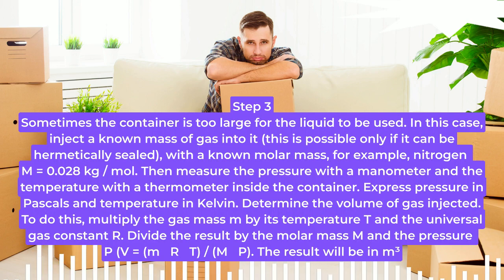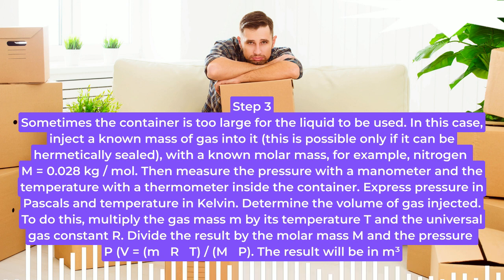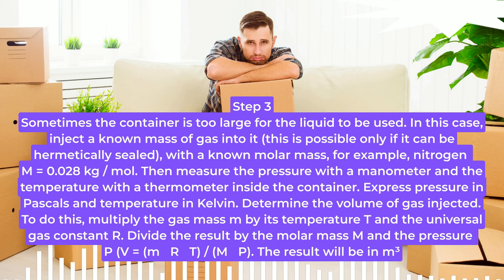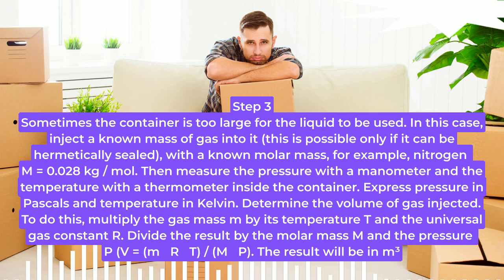Step 3. Sometimes the container is too large for liquid to be used. In this case, inject a known mass of gas into it. This is possible only if it can be hermetically sealed, with a known molar mass — for example, nitrogen, M = 0.028 kg/mol. Then measure the pressure with a manometer and the temperature with a thermometer inside the container. Express pressure in pascals and temperature in Kelvin. Determine the volume of the injected gas by multiplying the gas mass m by its temperature T and the universal gas constant R, then dividing the result by the molar mass M and the pressure P: V = (m × R × T) / (M × P). The result will be in m³.